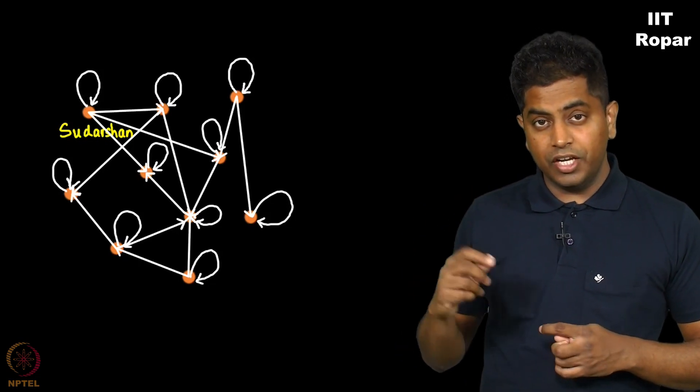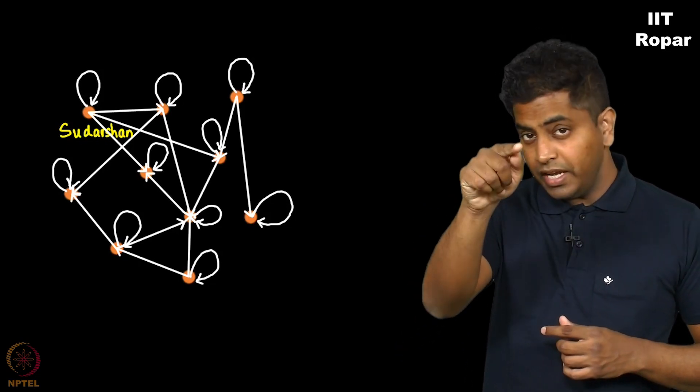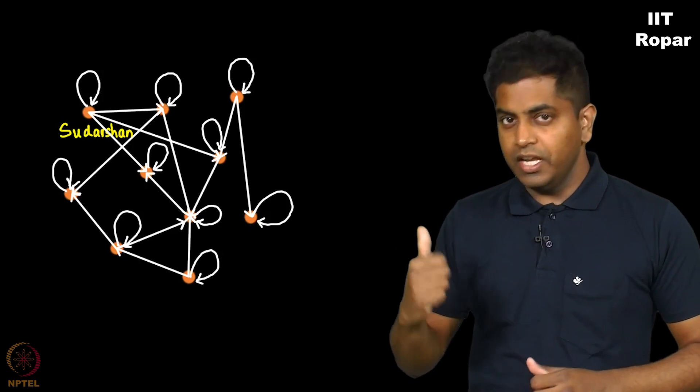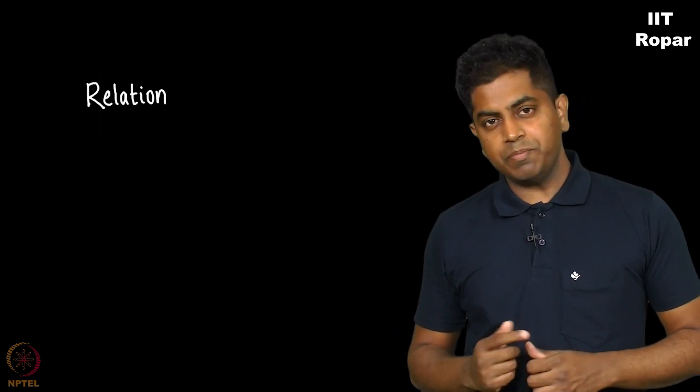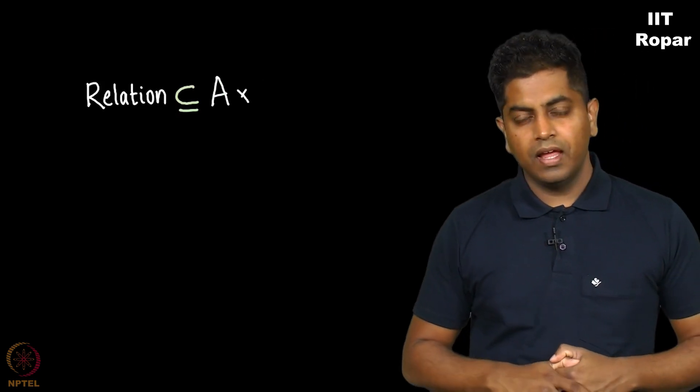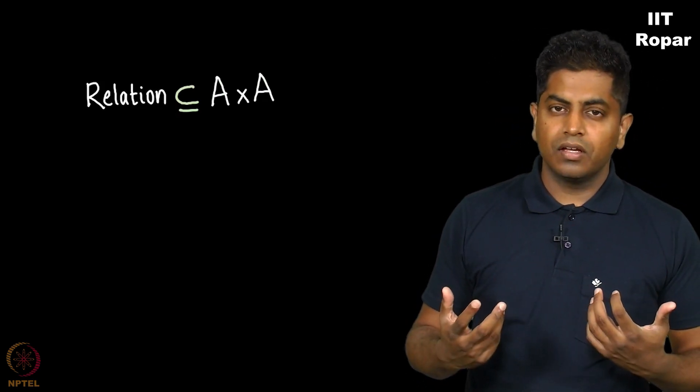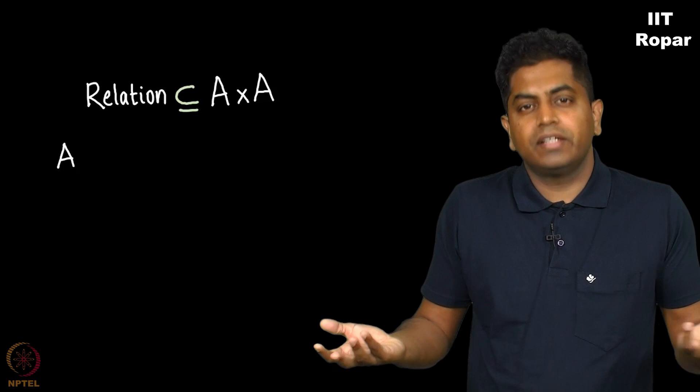So here is a relation, let's get back to our A cross A definition. Here is a relation which is a subset of our set A cross A where A comprises of all 10 students.